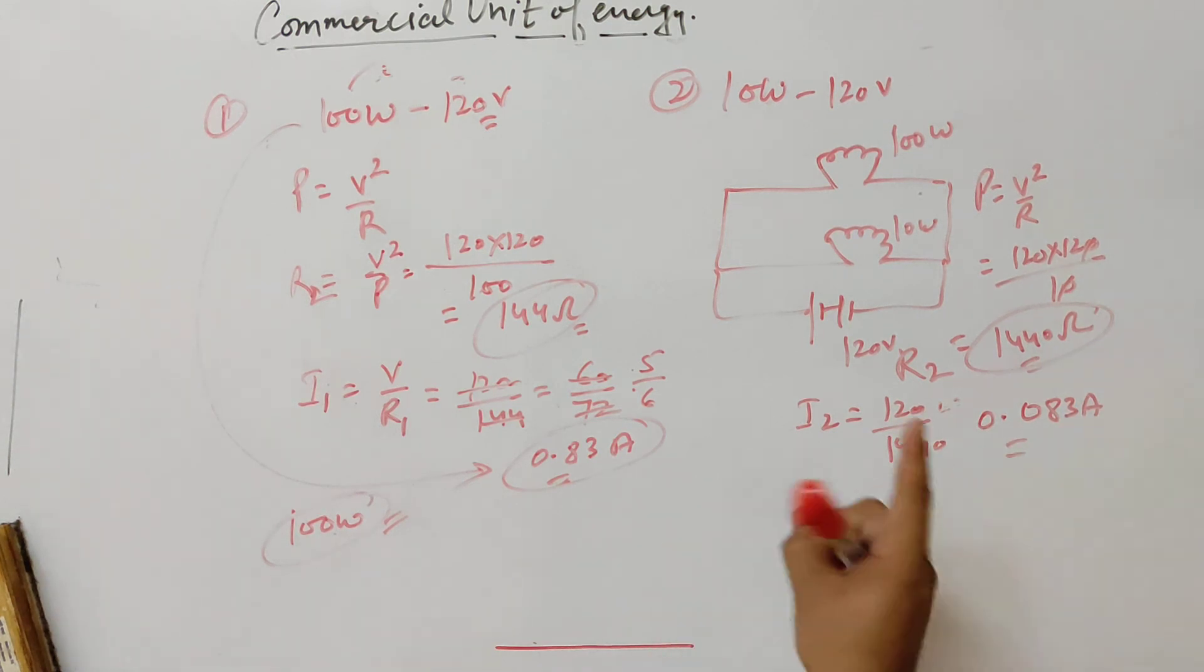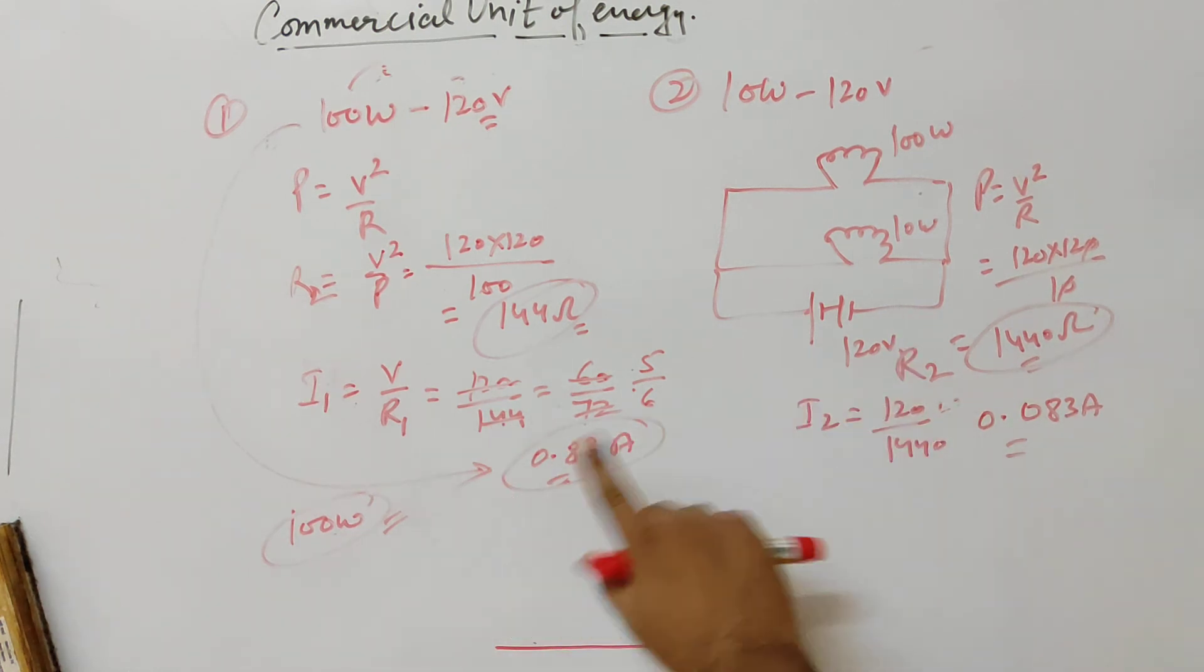If we keep in series, which has less power will consume more energy. In parallel, which has more power will have more consumption. In series, it will reverse.